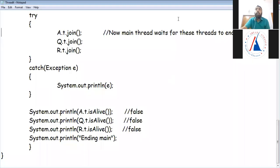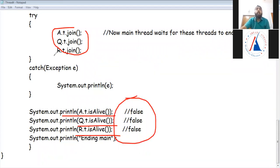Now if we print a.isAlive, q.isAlive, this will return false because the main will execute when the threads end.